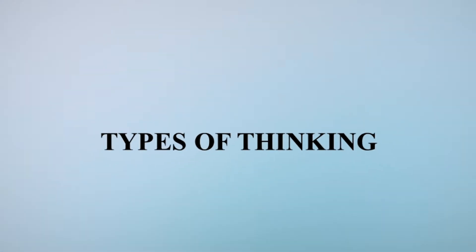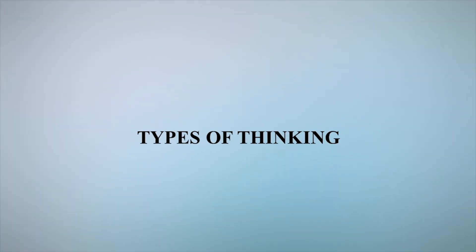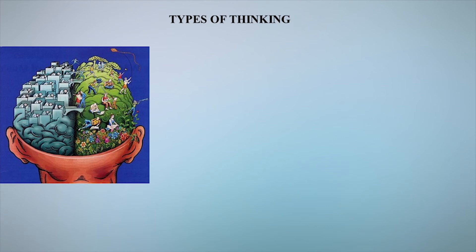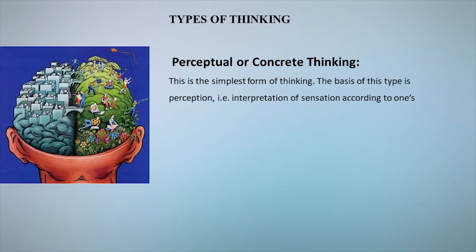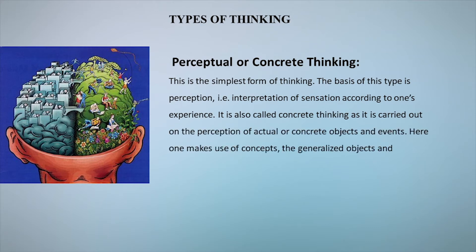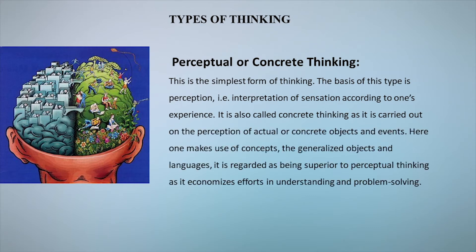Types of thinking: thinking can be classified into different types. The first is perceptual or concrete thinking — the simplest form of thinking, based on perception, that is interpretation of sensation according to one's experience. It is called concrete thinking as it is carried out on the perception of actual or concrete objects and events.